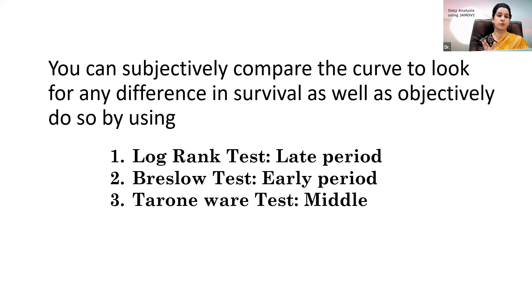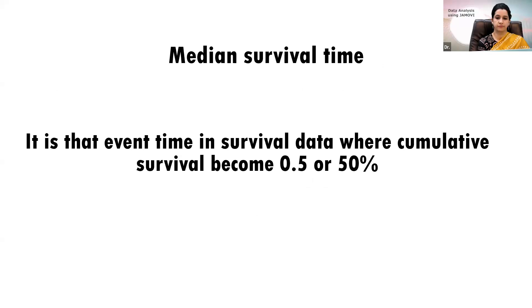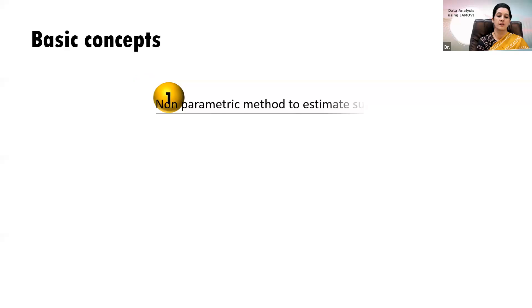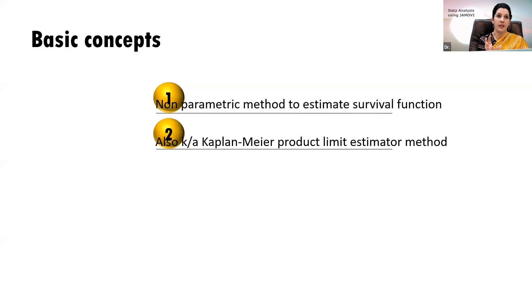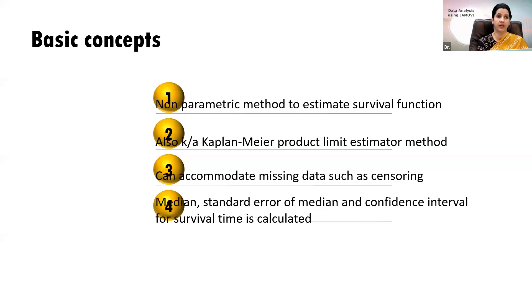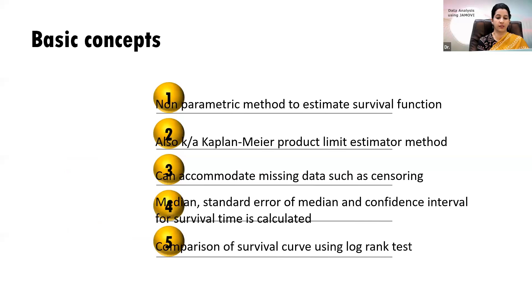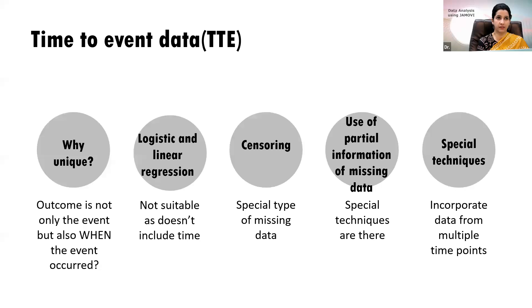The median survival time in survival analysis is the time point at which the cumulative survival becomes 0.5 or 50% — meaning 50% of the people in your data have achieved the event. Kaplan-Meier is a non-parametric method to estimate the survival function. It can accommodate missing data such as censoring, and the median, standard error of the median, and confidence interval are calculated. It can also compare survival curves using the log rank test.